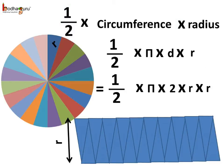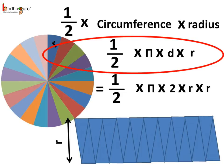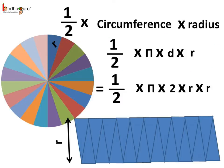Now, the circumference is equal to π multiplied by the diameter or π multiplied by 2 times the radius. So, putting this value of circumference, we get 1/2 multiplied by π multiplied by D multiplied by R.